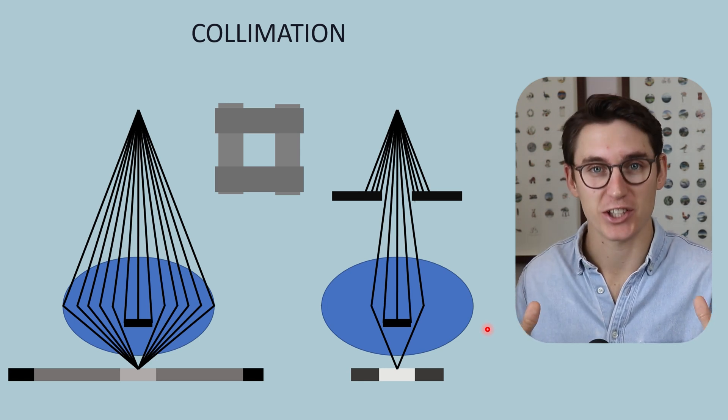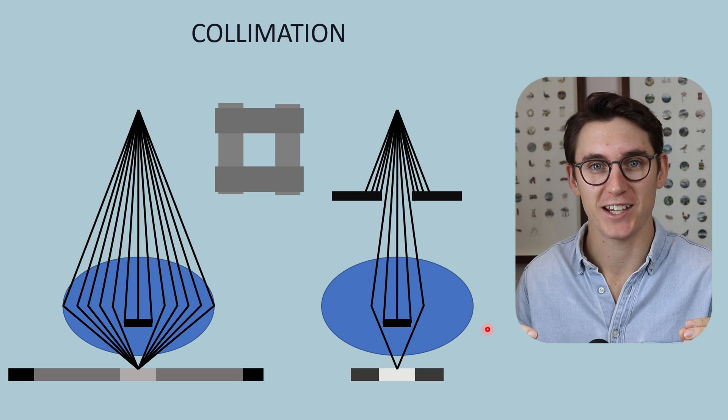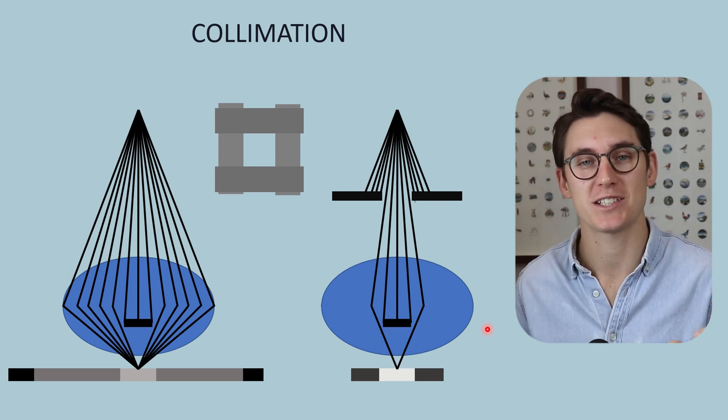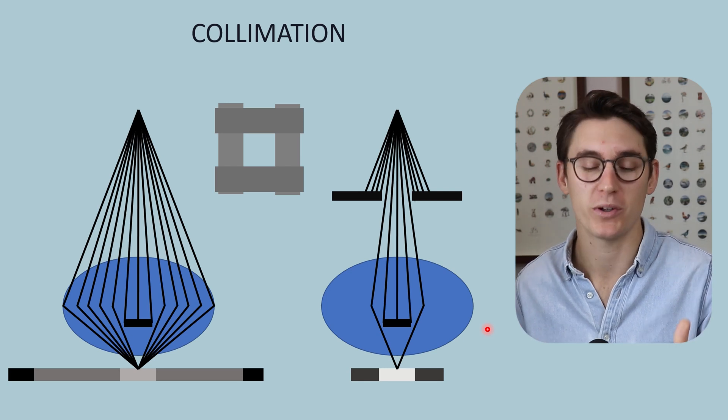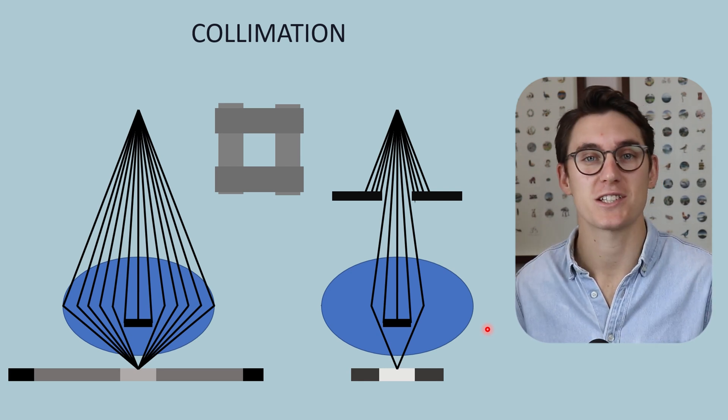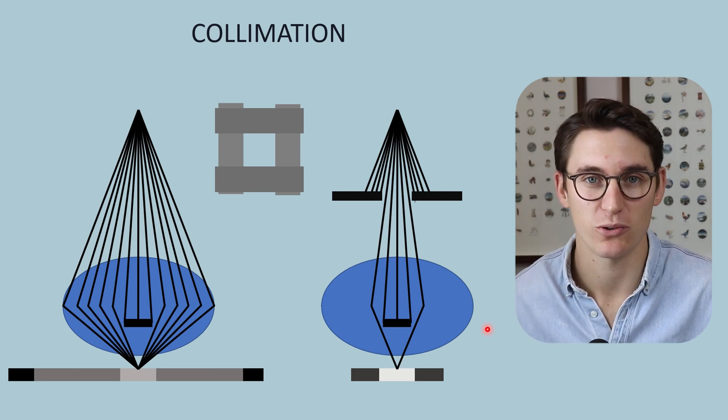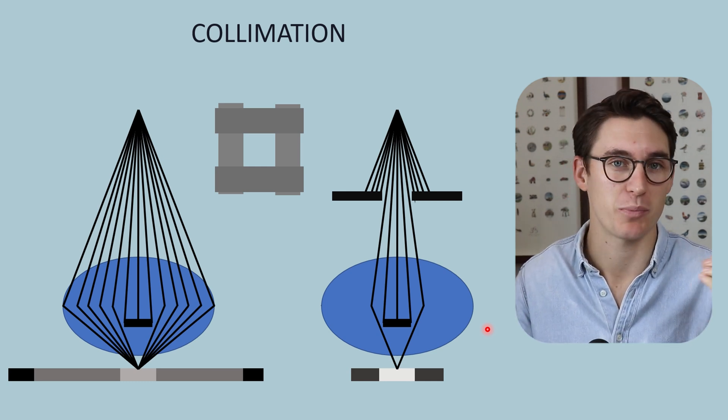The scatter reduction and dose reduction to the patient here is proportional to the field size reduction. So not only are we decreasing patient dose and scatter, but we're improving our image. And if you ever asked in an exam, how can we reduce our scatter? Collimation should be your first answer because it has that patient benefit as well.